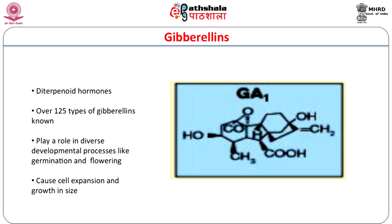Gibberellins were discovered as plant growth promoting compounds produced by a pathogenic fungi, Gibberella fujikuroi, which brought about a rapid increase in the height of infected rice plants. In the 1950s, gibberellins were shown to be synthesized by almost all plants, and over 125 structural forms are known today. These hormones play an important role in plant growth, especially during developmental phases such as germination and flowering.